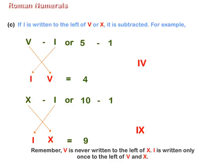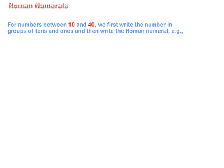Remember, V is never written to the left of X. I is written only once to the left of V and X. For numbers between 10 and 40, we first write the number in groups of tens and ones and then write the Roman numerals.